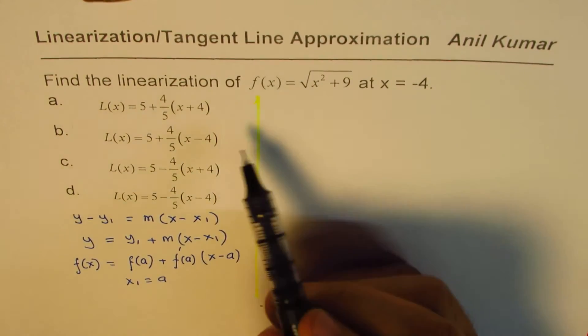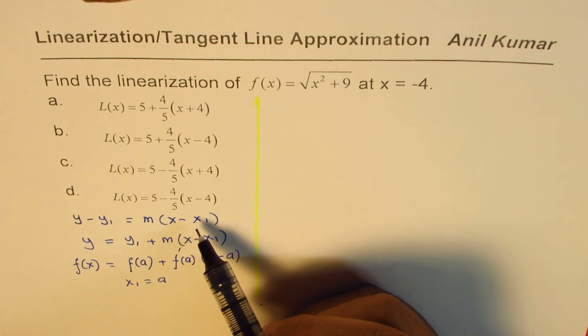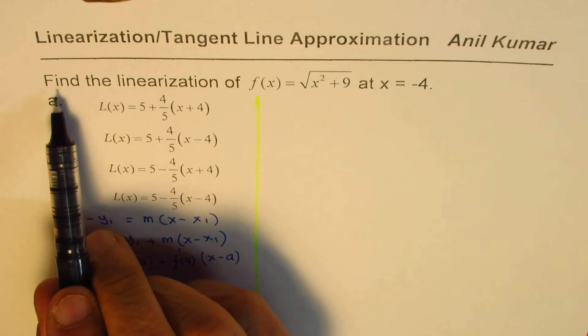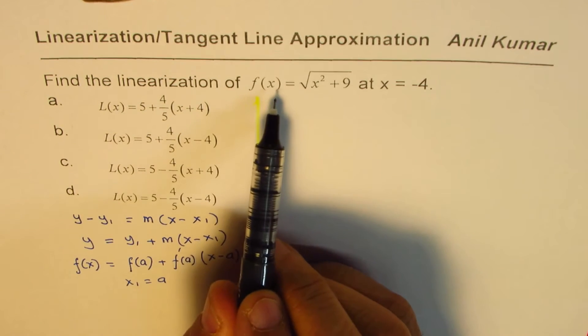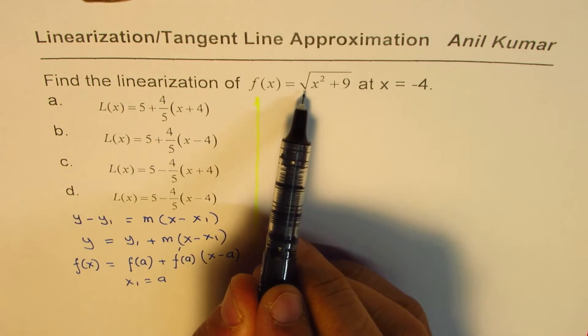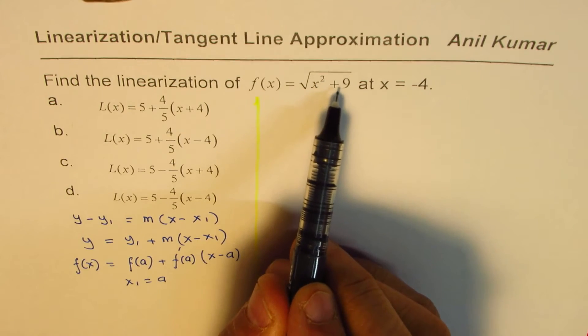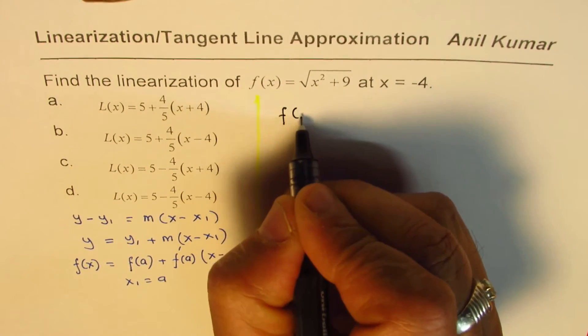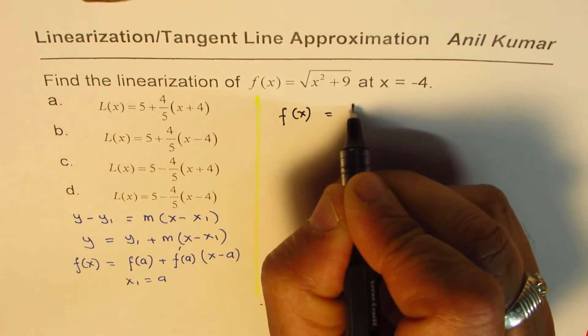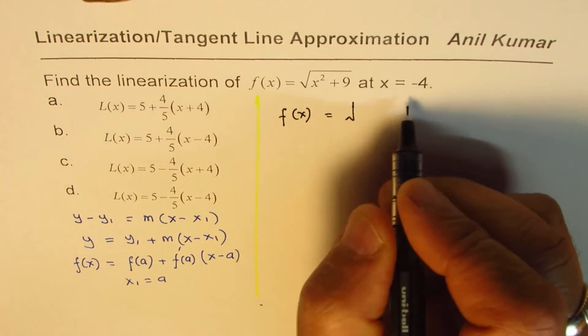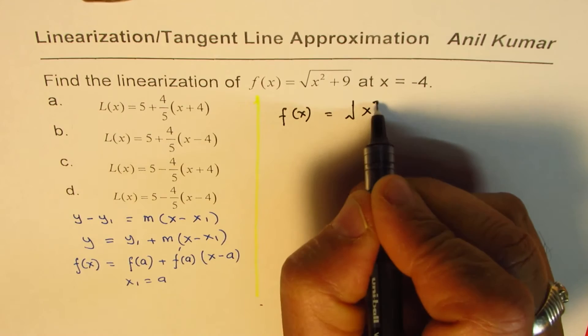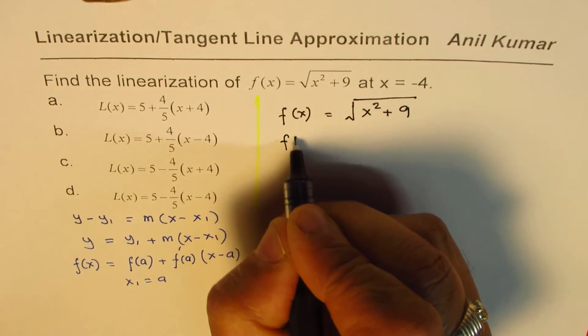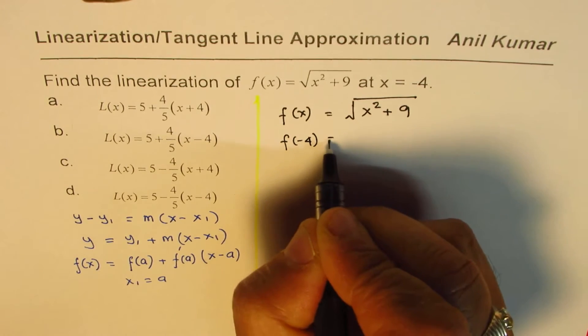Now let us see what choice matches with the given position. So we have find the linearization of f(x) equals to square root of x squared plus 9 at x equals to minus 4. So whenever you're given a function like this, what we should do here is find the value at minus 4.